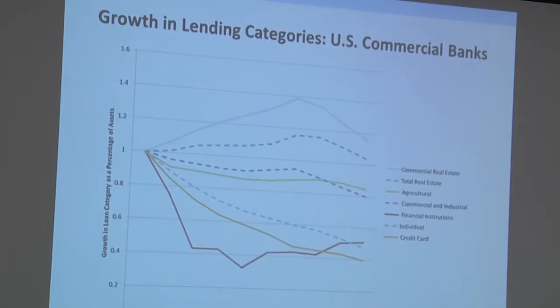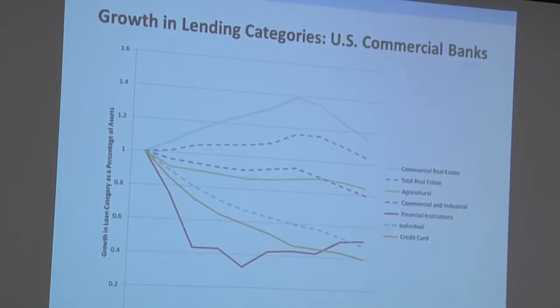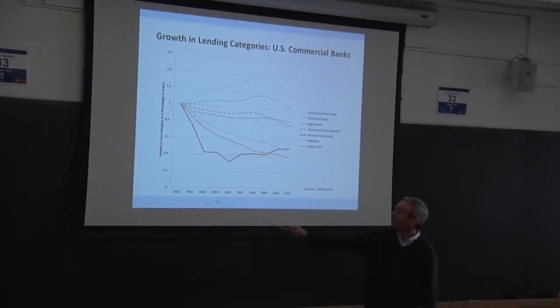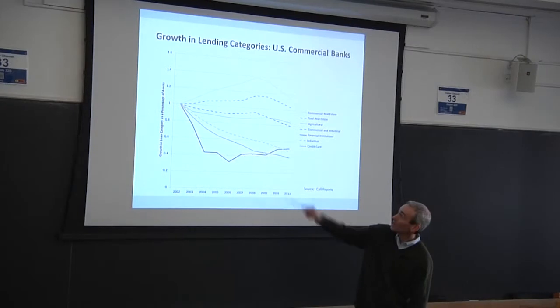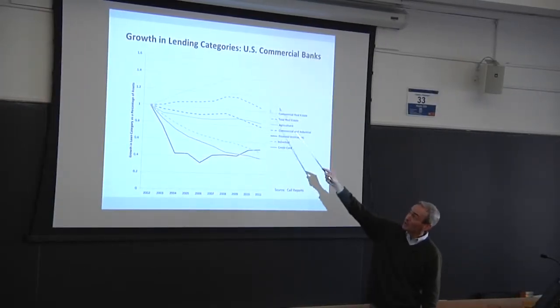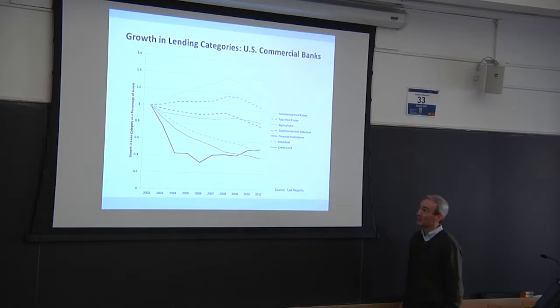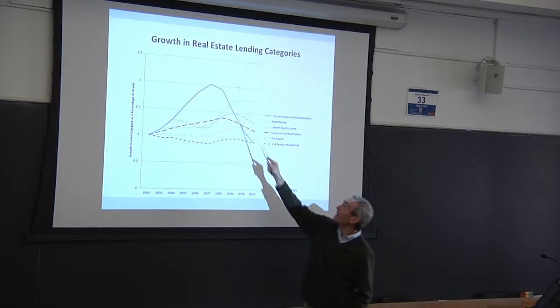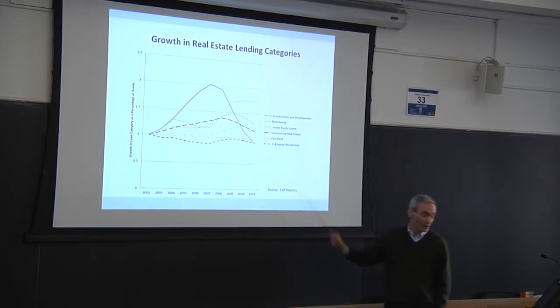And I'm out of time. I'll just sort of highlight what would have happened in retrospect. So, this is the growth in various lending categories for U.S. commercial banks, starting back in 2002, normalized so that they're all at one. So, you see, the commercial real estate is the category of lending that grew the fastest. So, in our scheme, that would have had an increase in the risk weight. Within real estate categories, the fastest growth was in construction and development loans. So, that, in particular, would have had a high growth.